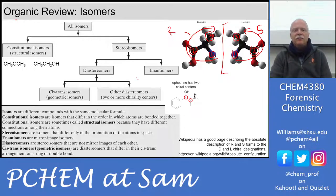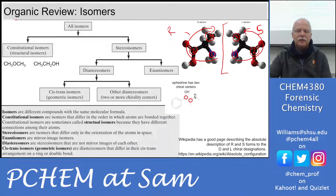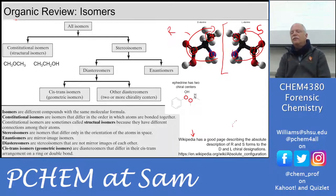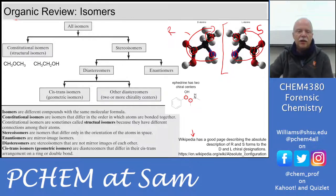When there are multiple chiral centers, we get diastereomers. Ephedrine has two chiral centers. For understanding the relationship between R/S and D/L designations, the Wikipedia article on absolute configuration is actually a great resource — just search 'R S D L chiral Wikipedia' to find it.